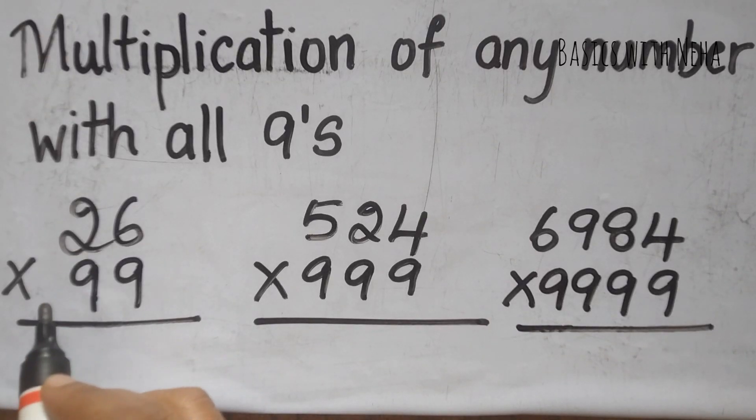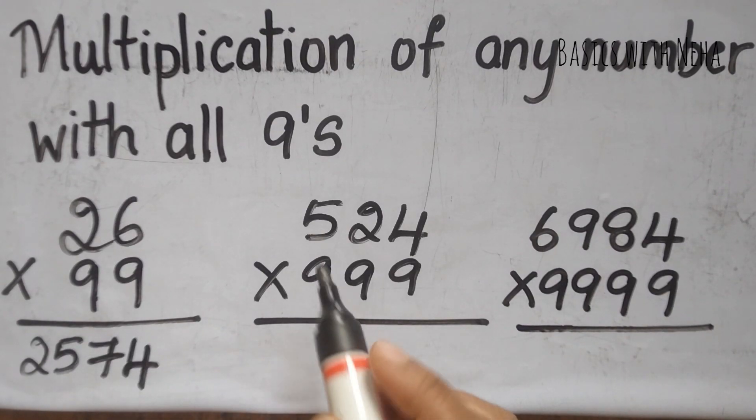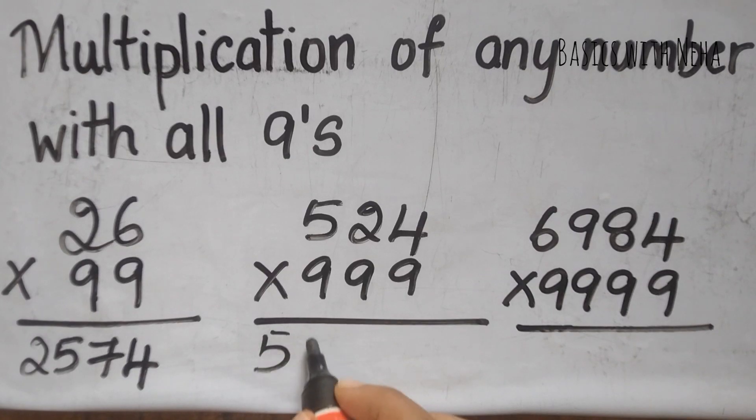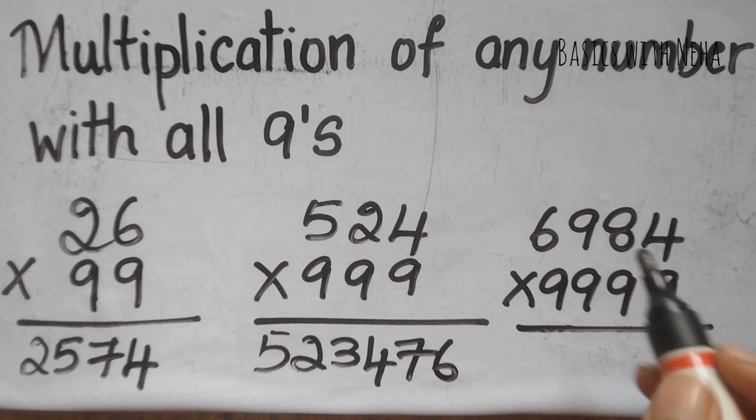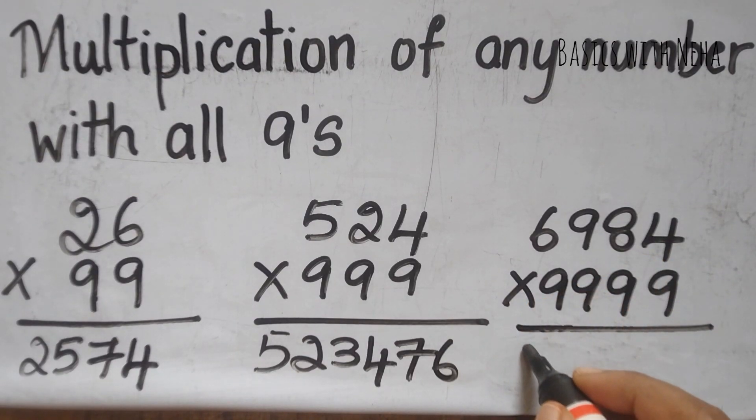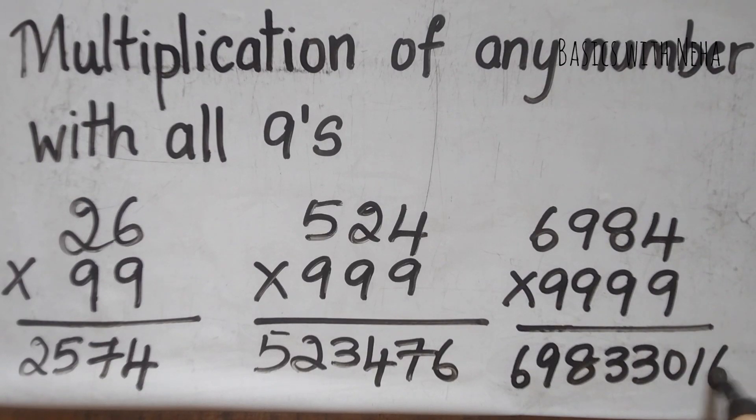26 into 99 is 2574. 524 into 999 is 523476. 6984 into 9999 is 69833016.